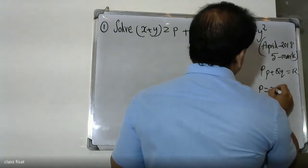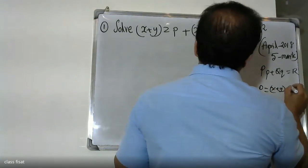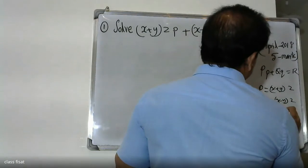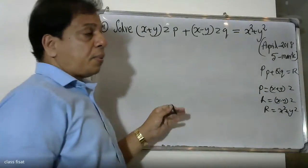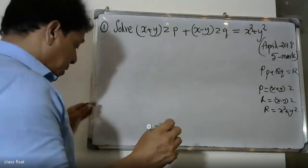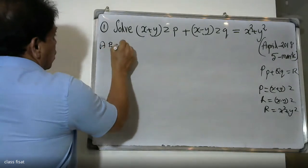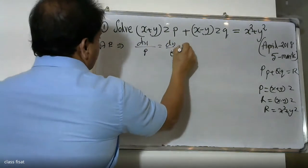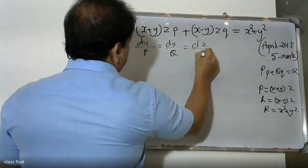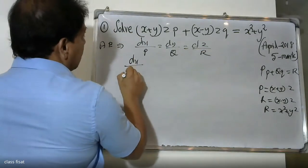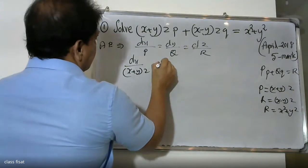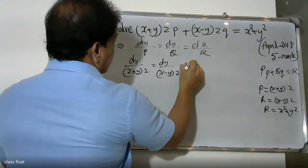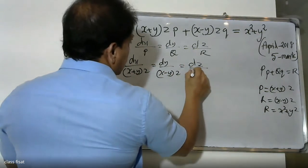P is equal to (x+y)·z, Q is equal to (x-y)·z, R is equal to x²+y². We are learning about dx by P, dy by Q, dz by R. So dx by P corresponds to (x+y)·z, dy by Q corresponds to (x-y)·z, and dz by R corresponds to x²+y².